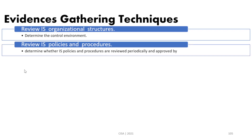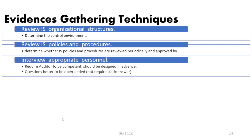We can review the IS organizational structure to determine the control environment. We can review policies and procedures to determine if they are periodically reviewed and approved by top management. We can also interview appropriate personnel to understand the business mission, challenges, and gain insights about technical skills. Auditors should be competent in interviewing. Interview questions should be open-ended — requiring more than a yes or no answer — to encourage the interviewee to express their full perspective.